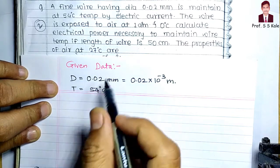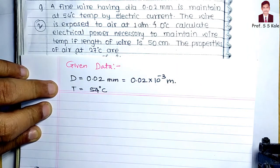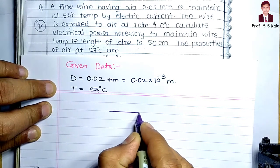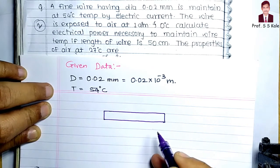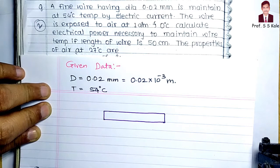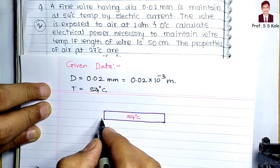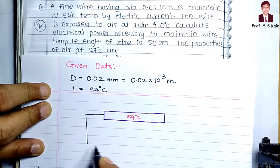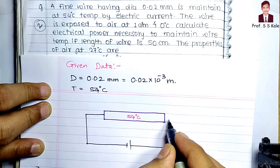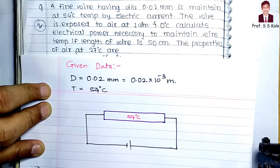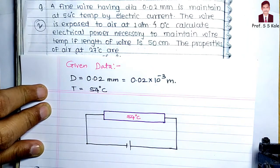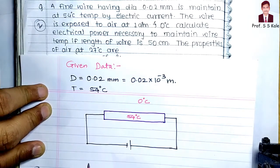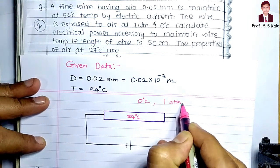The wire is maintained at a temperature of 54°C by electric current. If I draw the figure, this electric wire has a diameter of 0.02 × 10⁻³ m and is maintained at 54°C via electric current supply. The wire is exposed to air at one atmosphere and 0°C, so the air temperature is 0°C and pressure is one atmosphere.